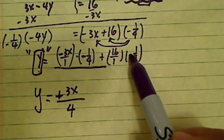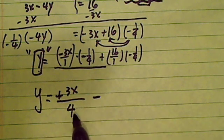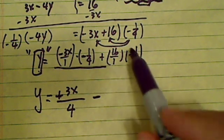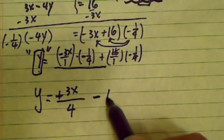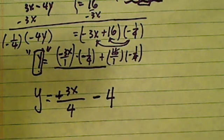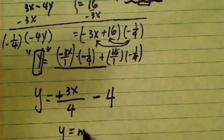And then same thing over here. Since this is minus and plus I'm going to have a negative sign here. And then the 4 goes into 16 four times. So I have minus 4. So here is in the shape of mx plus b form.